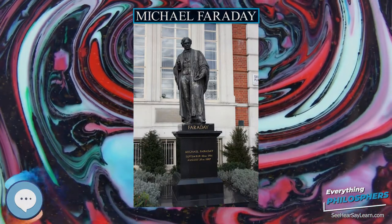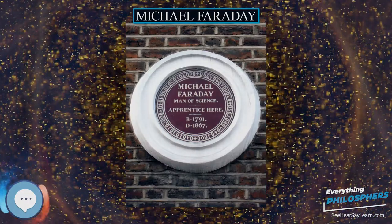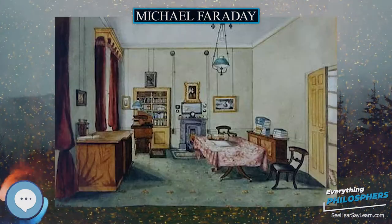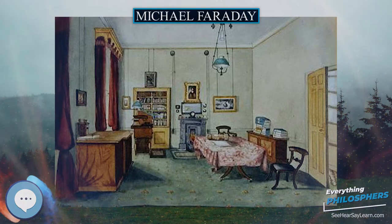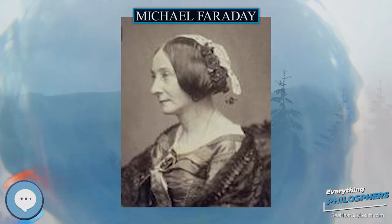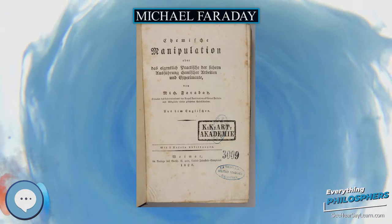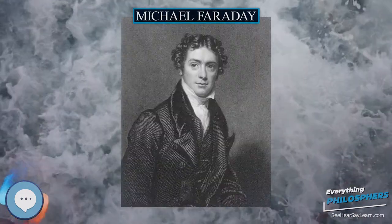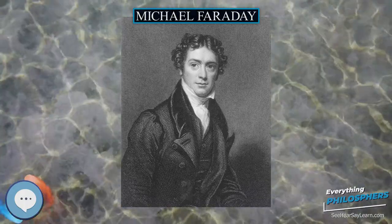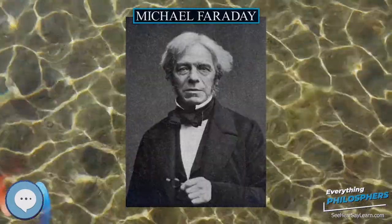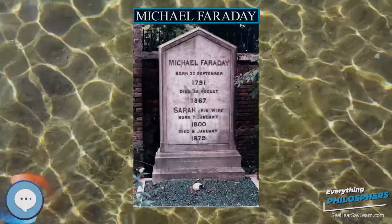Faraday is best known for his work regarding electricity and magnetism. His first recorded experiment was the construction of a voltaic pile with seven halfpenny coins, stacked together with seven discs of sheet zinc, and six pieces of paper moistened with salt water. With this pile he decomposed sulfate of magnesia. In 1821, soon after the Danish physicist Hans Christian Ørsted discovered the phenomenon of electromagnetism, Davy and British scientist William Hyde Wollaston tried, but failed, to design an electric motor. Faraday, having discussed the problem with the two men, went on to build two devices to produce what he called electromagnetic rotation. One of these, now known as the homopolar motor, caused a continuous circular motion engendered by the circular magnetic force around a wire extended into a pool of mercury wherein was placed a magnet; the wire would then rotate around the magnet if supplied with current from a chemical battery.